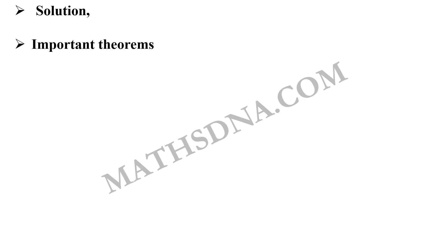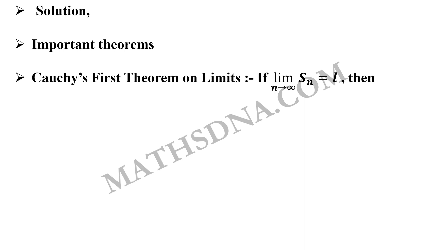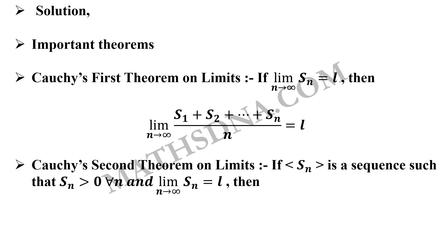For this question, you need to know two theorems given by Cauchy. Cauchy's first theorem on limits says that if limit n→∞ of Sn equals L, then limit n→∞ of (S1 + S2 + ... + Sn)/n also equals L. Cauchy's second theorem on limits says that if Sn > 0 for all n and limit n→∞ of Sn equals L, then limit n→∞ of (S1 · S2 · ... · Sn)^(1/n) also equals L.